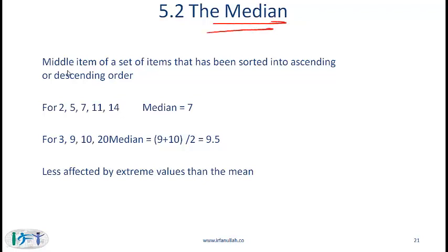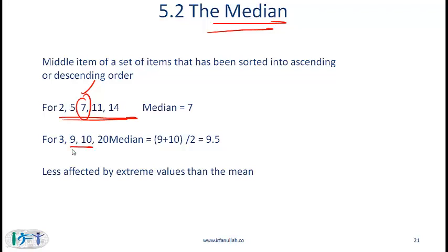The median is the middle item of a set of items sorted into ascending order. If you have an odd number of items, this is straightforward. If you have an even number of items, you take the middle two numbers — for example 9 and 10 — and take their average. Note that the median is less affected by extreme values than the mean.